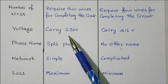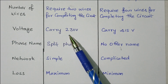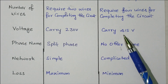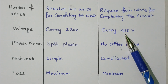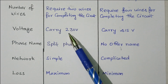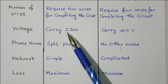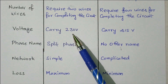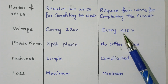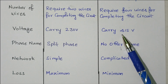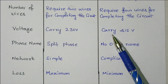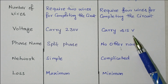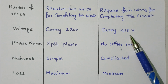The voltage in single-phase is around 230 volts, measured phase to neutral. In three-phase, when measuring phase to phase, the voltage is around 415 volts. Each phase carries around 220 volts, and measuring phase to phase gives approximately 415 volts, which is the standard value.